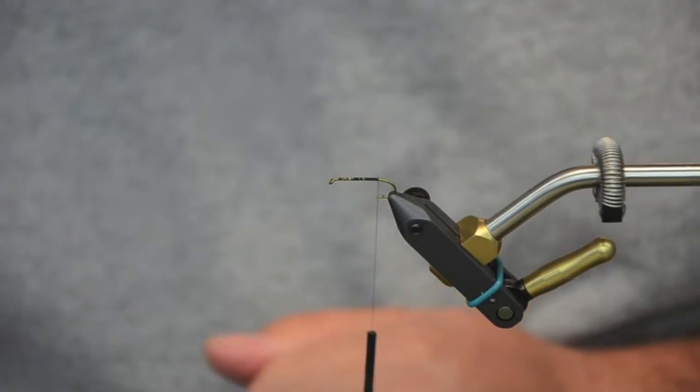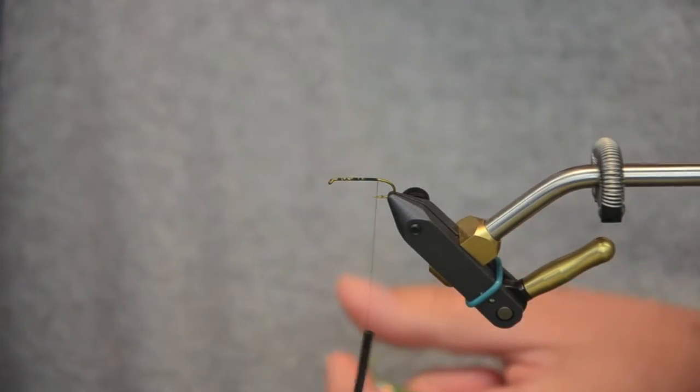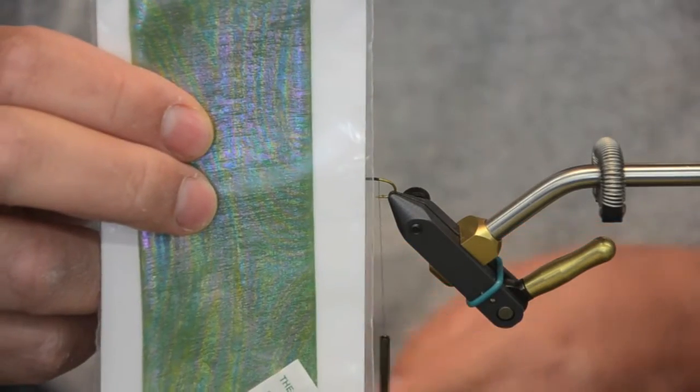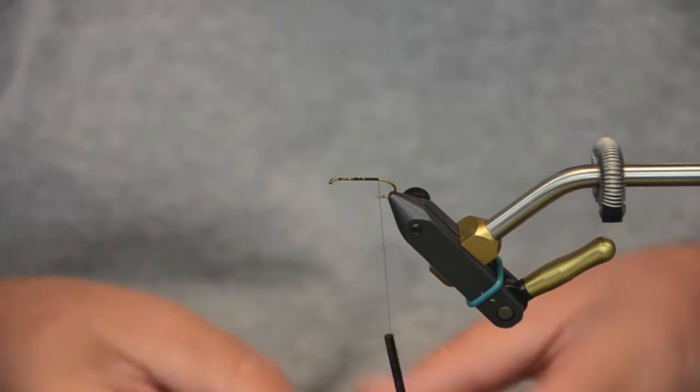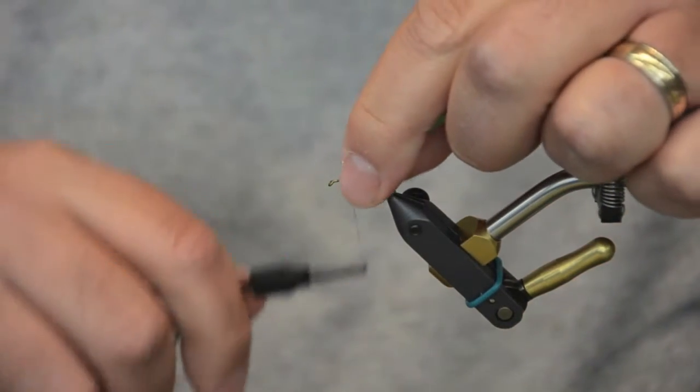The first thing we use is some Chewy Skin in Caddis Green. Kind of a neat product. These are UV reflective. They have a pearlescent sheen on the outside.